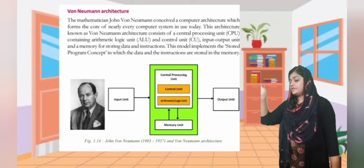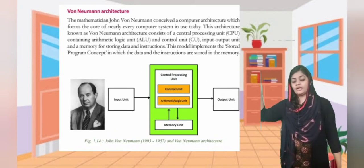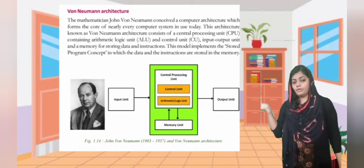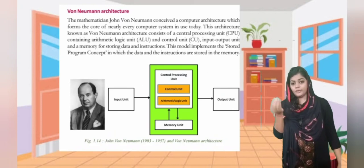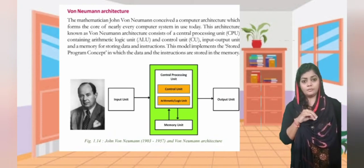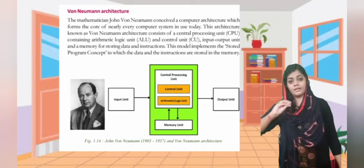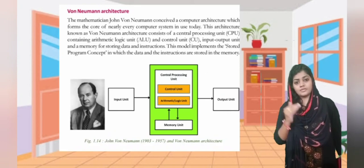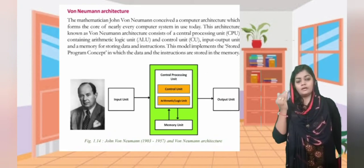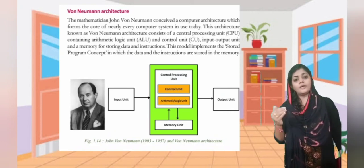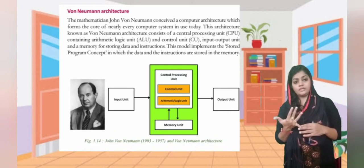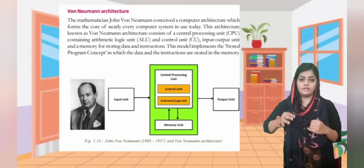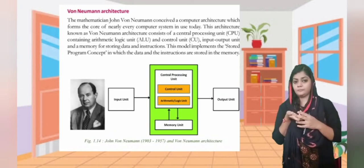This is the figure for Von Neumann's architecture. It includes the CPU, control unit, arithmetic logic unit, memory unit, input unit, and output unit.